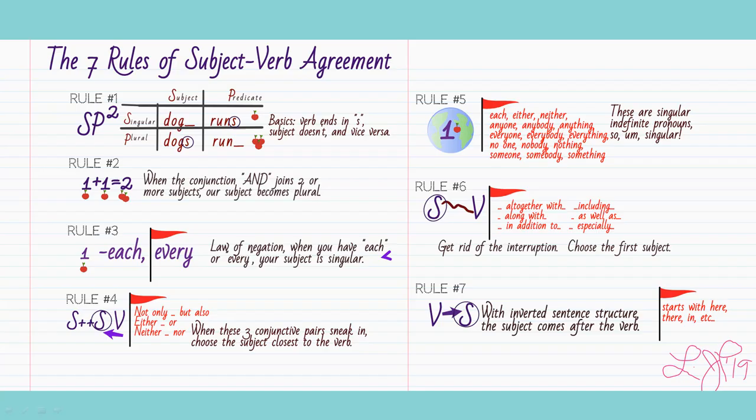I want to remind you of our seven rules of subject-verb agreement. Remember, we have S in the square — one, two, etc. A lot of these concepts are going to be revisited today, so keep them in mind and recognize that you already have a storage space in your brain for the new rules we're going to examine today.